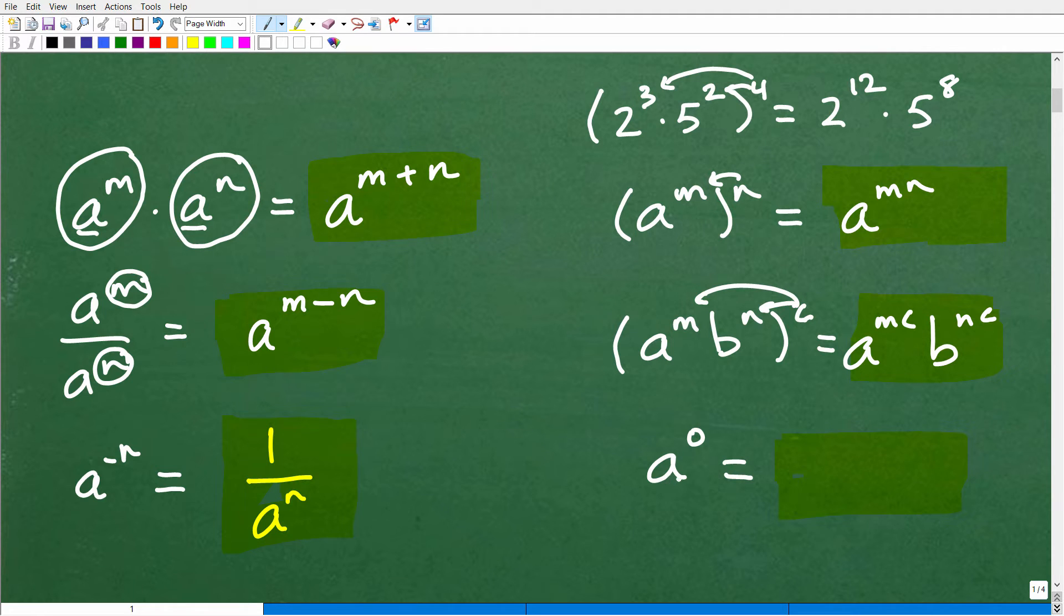And then a to the 0, anything to the 0 power is 1. That means anything to the 0 power. It could be something crazy like x plus y to the 0 power. Guess what the answer is? It is always going to be 1. So these are the rules of powers and exponents. You got to know these rules because you're going to use these rules in different ways.